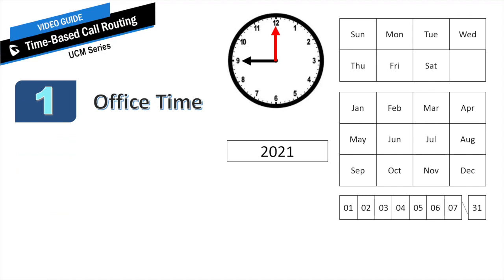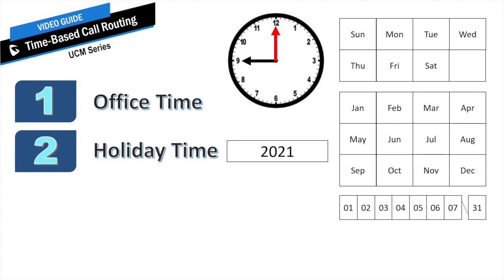When it comes to a predefined time-based routing solution, we offer two options: office time and holiday time. The cool thing about having predefined time options on the PBX is that you do not have to constantly remember every time you create an inbound or outbound route what time your company operates. Many of us installers work at multiple locations and it's not likely we'll remember everyone's office and holiday times. We can even give users access to the time settings so they can actively change them.